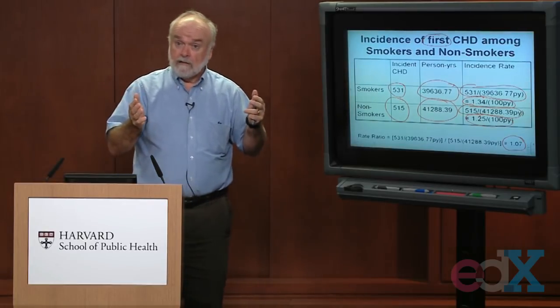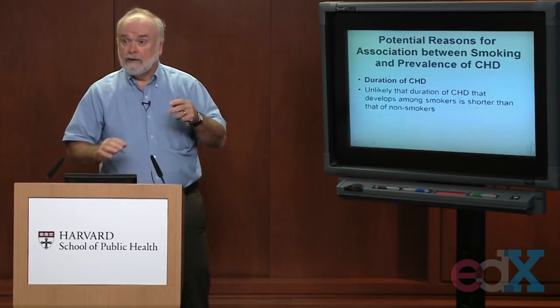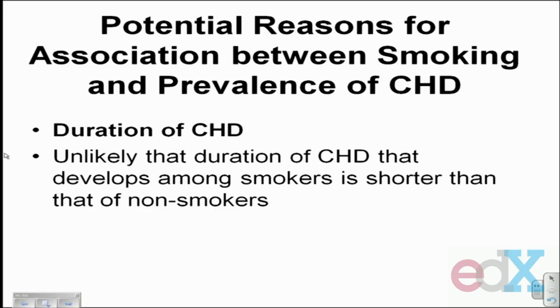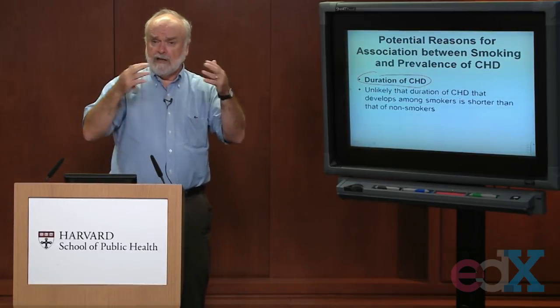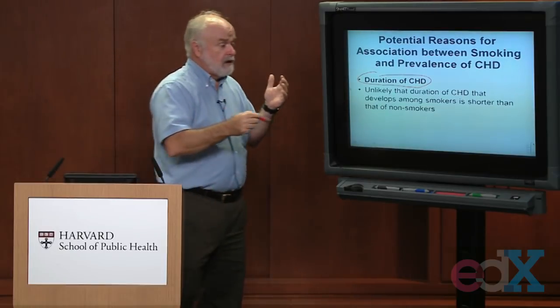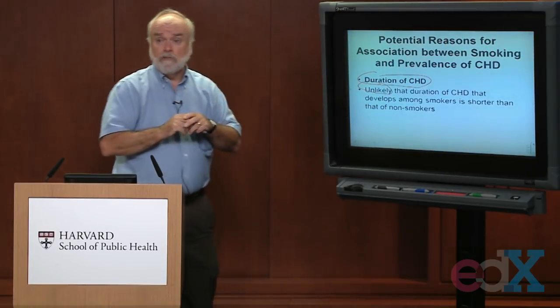So it's unlikely that the reason we saw higher prevalence of coronary heart disease among non-smokers in the cross-sectional study is because non-smokers are at higher risk — these data suggest smokers actually have higher incidence. Another reason for higher prevalence in one group is duration of disease. Maybe non-smokers who develop heart disease survive longer with it. When we take a snapshot in 1956, we'd see higher prevalence among non-smokers due to longer duration, not higher risk.